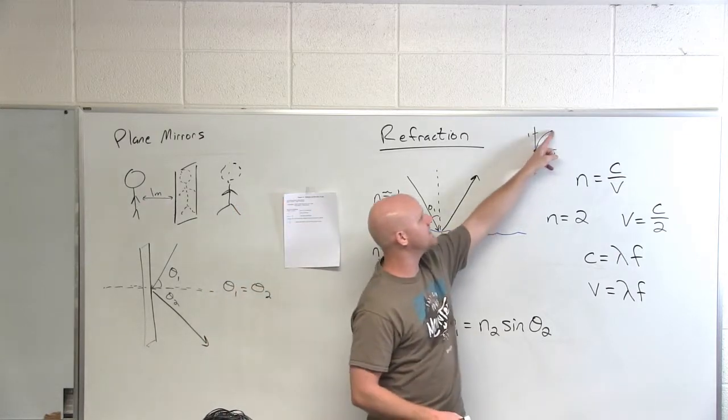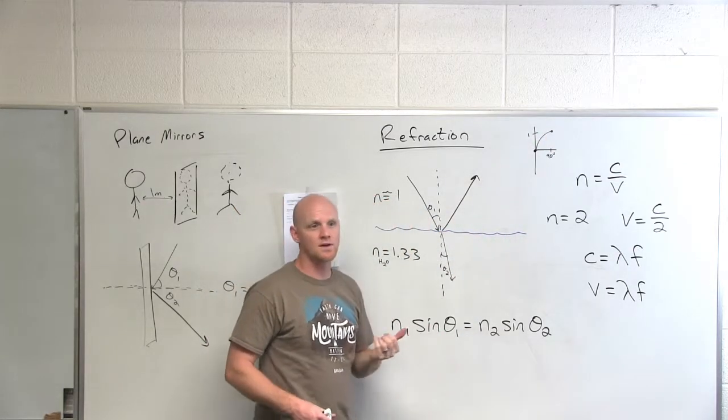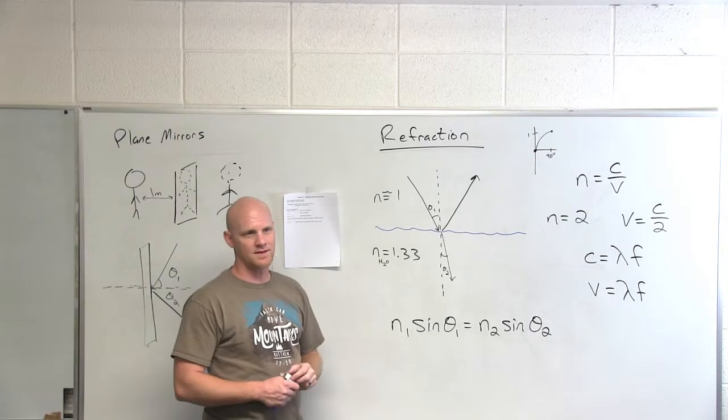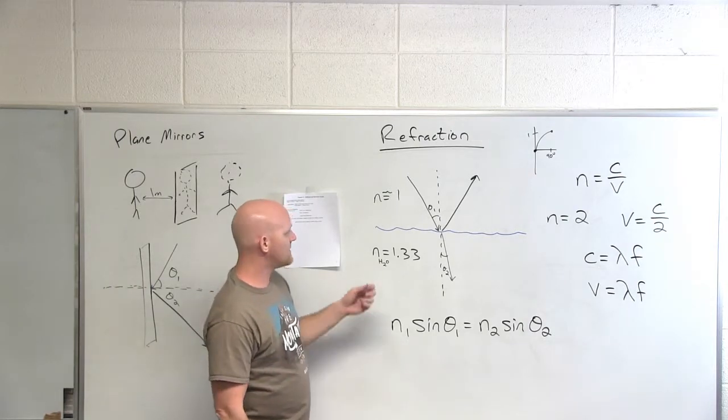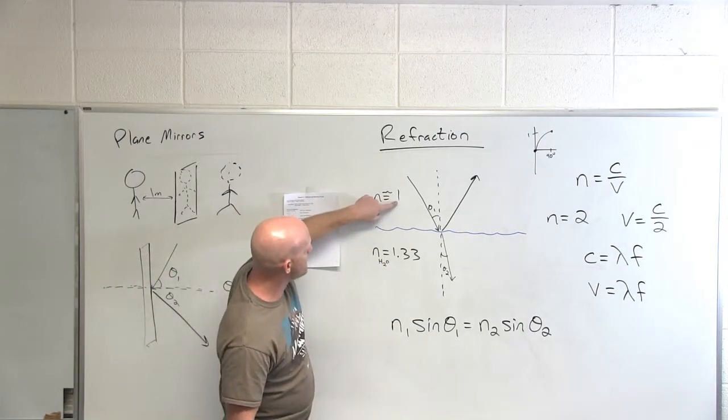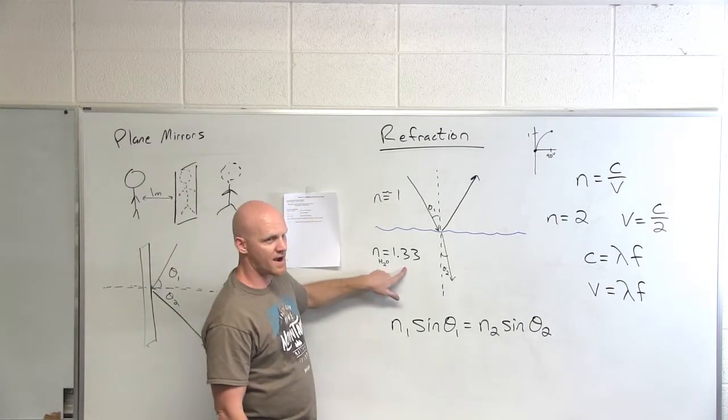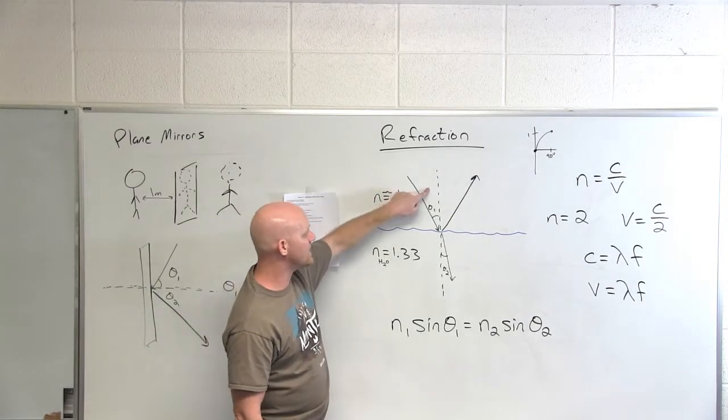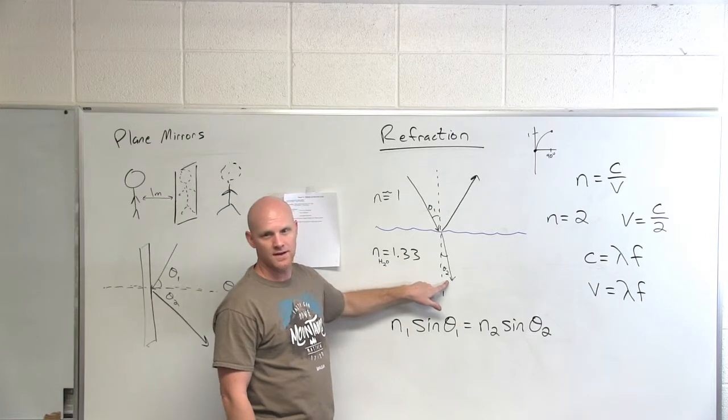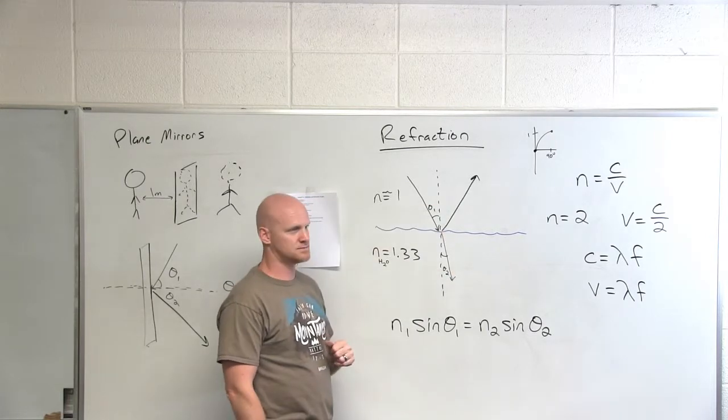And if you have the smaller value for sine theta, that means you have the smaller theta as well, because we're only concerned with angles up to 90. So in this case, I saw that we were going from a smaller index of refraction to a larger index of refraction, which means we have to go from a larger angle to a smaller angle. And so it bends towards the normal.